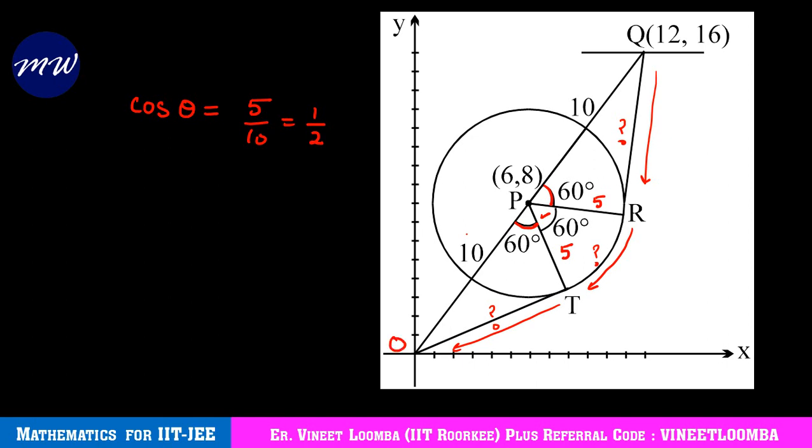So this distance - you can find it by Pythagoras theorem or using sine. Using sine 60 degrees, let's say this distance is x, then sine 60 is x upon 10. Sine 60 is root 3 by 2, so you have x as 5 root 3. This will also be 5 root 3 because exactly the same triangle is forming.